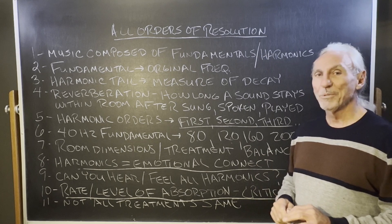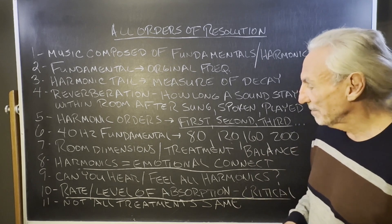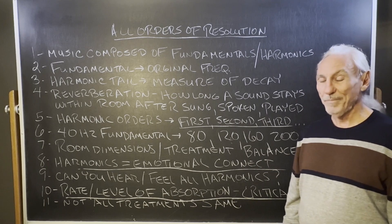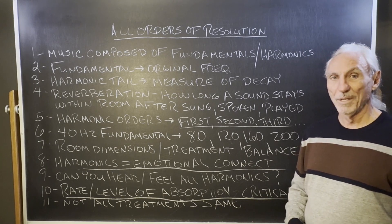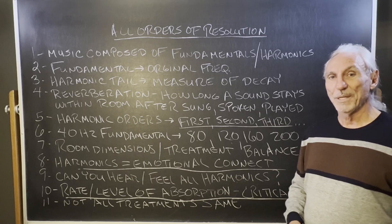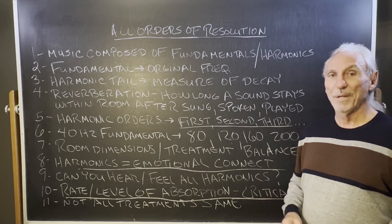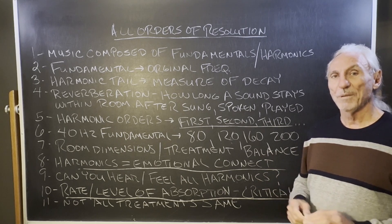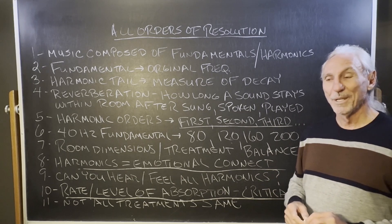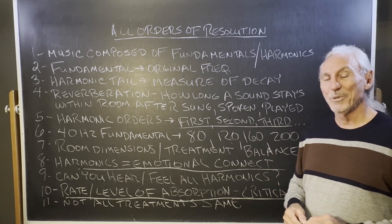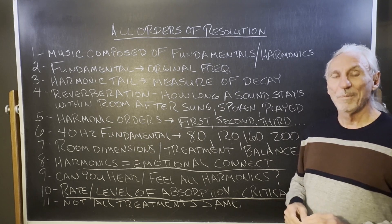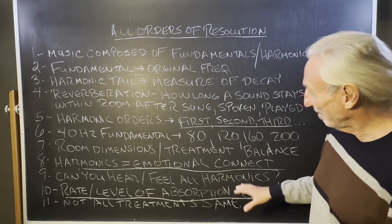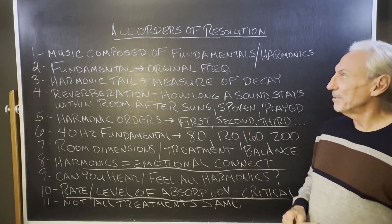That's what you have to focus on — that's the big frequency range. Not all treatments are created equal. Most of the stuff in the marketplace is horrible; it's boxes filled with building insulation, and you don't want that. You want the proper rate and level for music and voice, because music and voice is different than noise. Most treatments out there are noise treatments and have nothing to do with the harmonic structure of music and voice. That's where all the emotion lives — that's what you have to get right in your room.